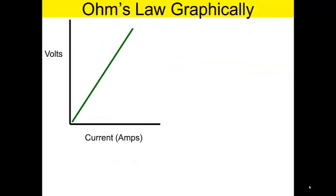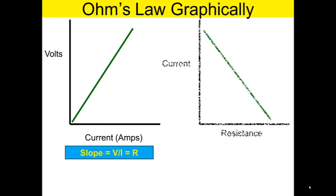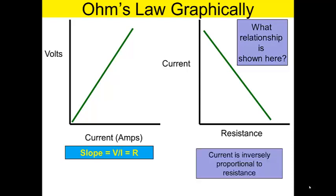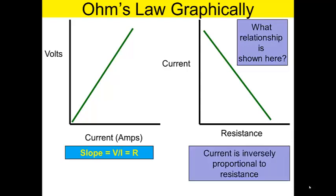Graphically speaking, you can see in this graph, as voltage increases, so does the current. So slope is equal to V over R. R is resistance, or the slope of that graph. In this case, you can see current going down and resistance going down. What relationship is shown here? That current is inversely proportional to resistance. So as you decrease current, you increase resistance, and vice versa.